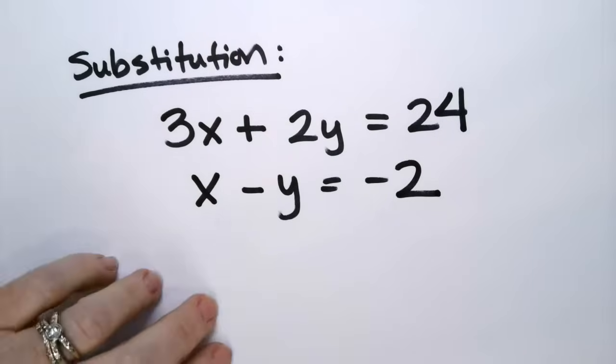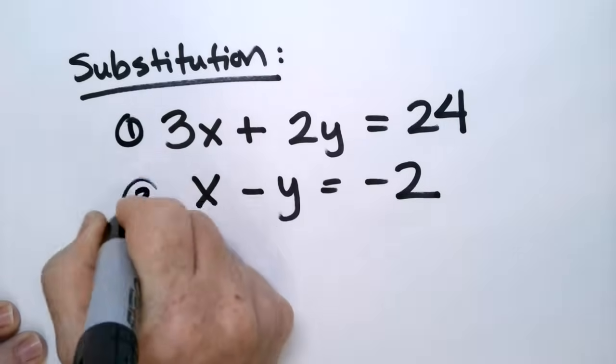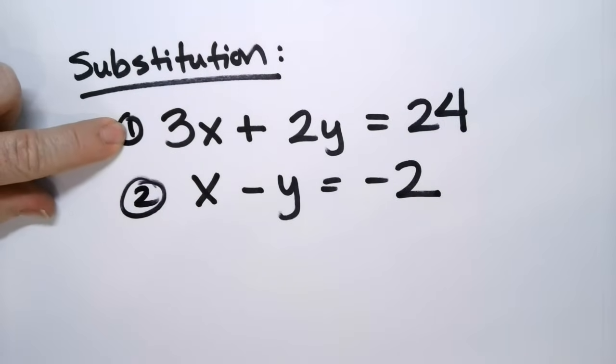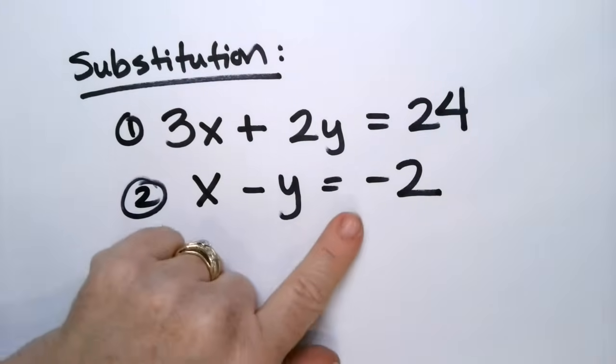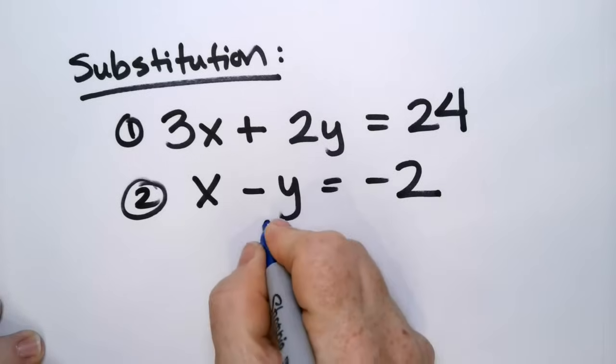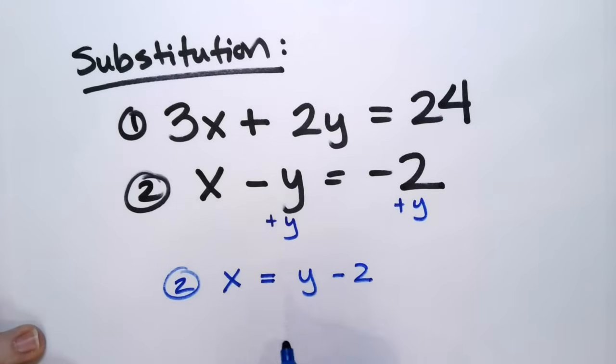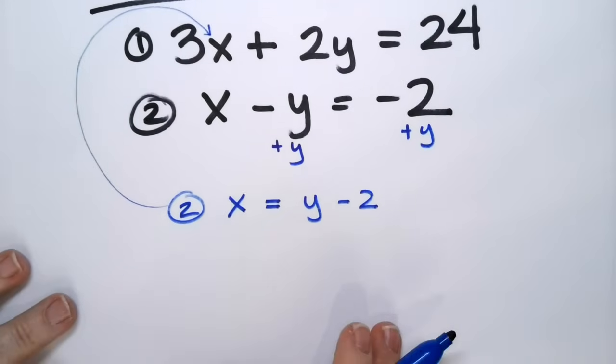You could do elimination on this one. But here's what I want you to do. You set one of the equations, whichever one is easiest for you to work with. This one looks messy to me. Big number. Bottom one looks easier. You solve it for whichever one is easiest to solve for. I'm thinking if I just plus y and plus y, I can rewrite number 2 to be x equals y minus 2. Then you're going to take this and stuff it into there. You're going to substitute it.